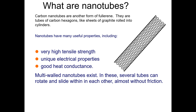With bulk materials, if you want to rotate one inside another, there is a lot of friction. But this friction problem is not present in the case of carbon nanotubes — you can easily rotate them within each other without any friction.